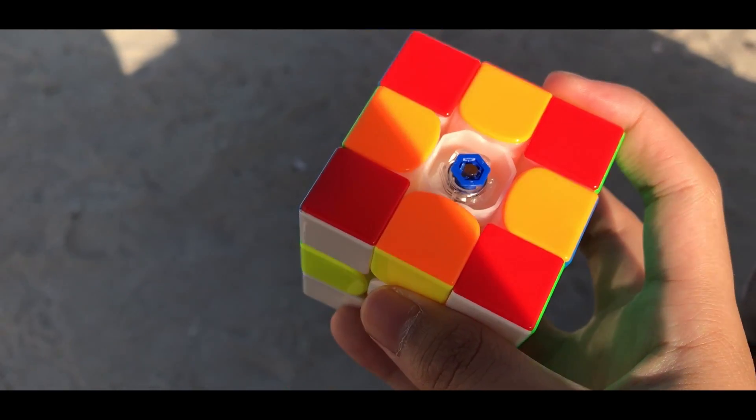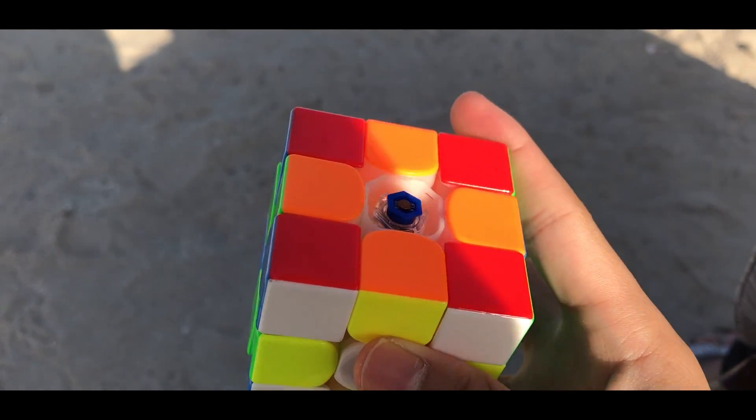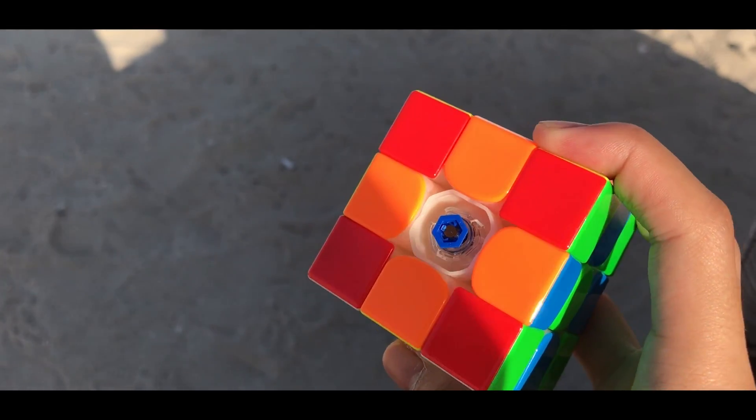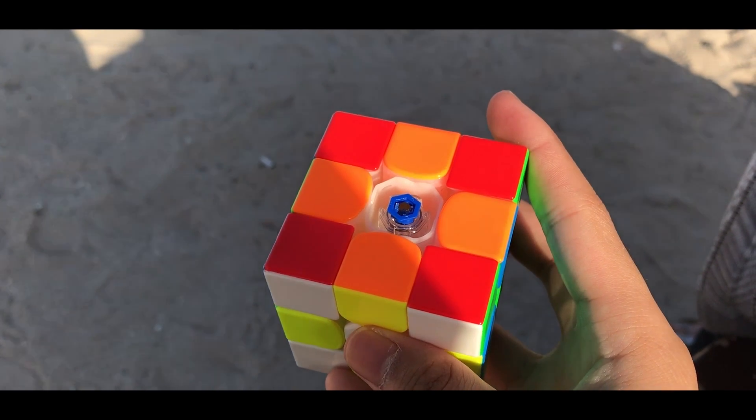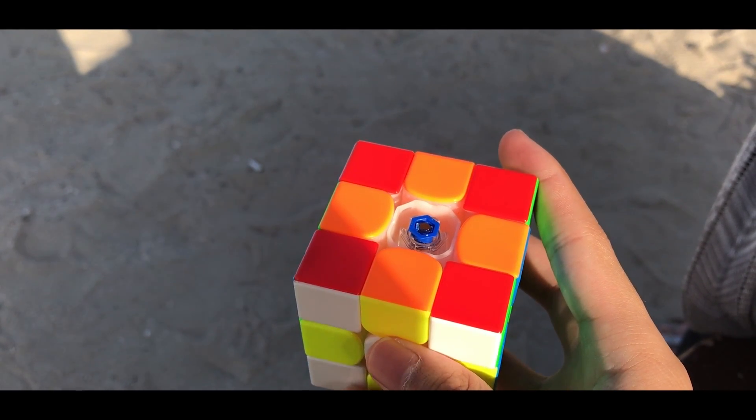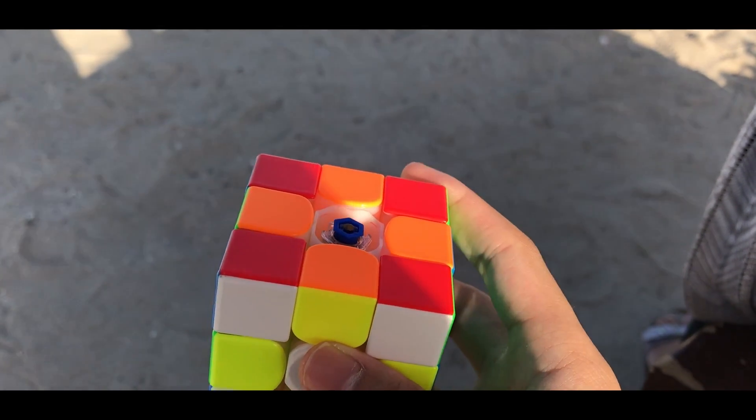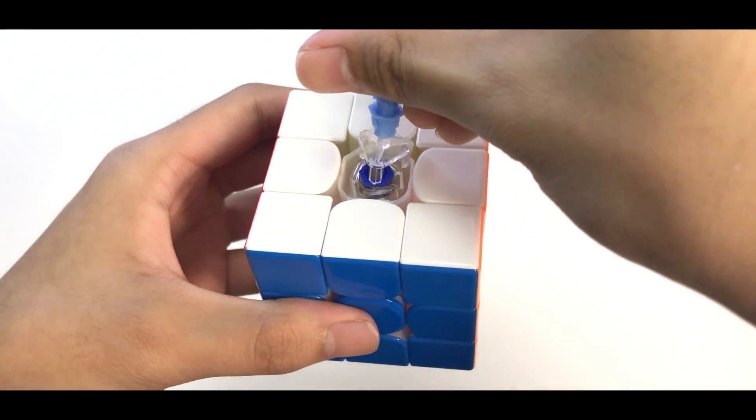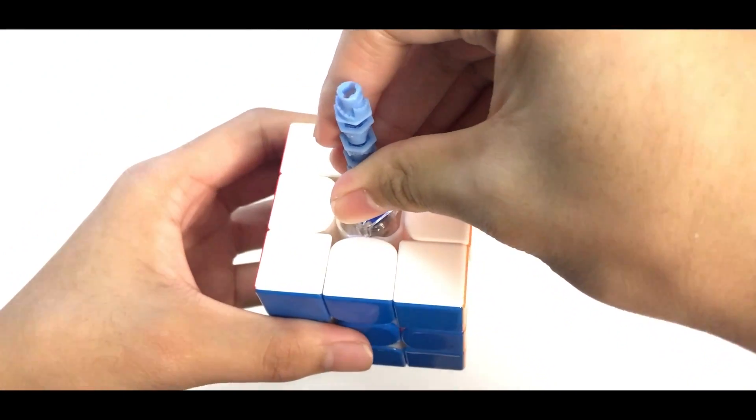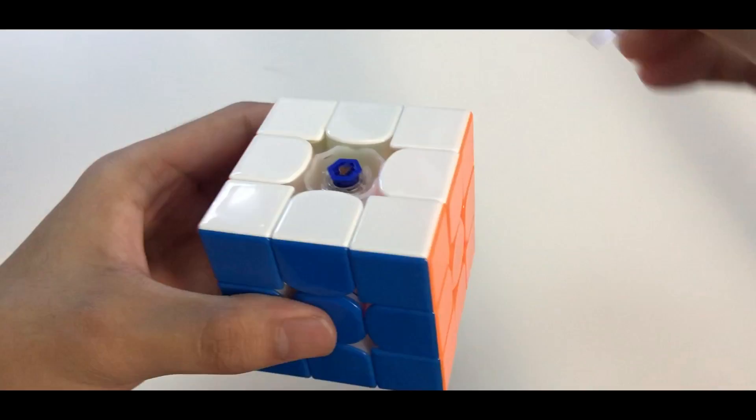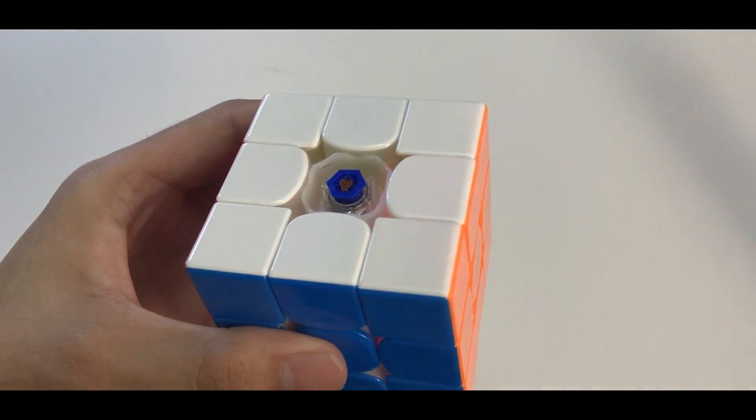Speaking of tensions, my setup for the cube is actually dark blue GMS set at number 2 which is the second tightest setting and the clicks are 4 clicks. My magnet strength, I'm using the hex ones set at number 3 which are the strongest settings.